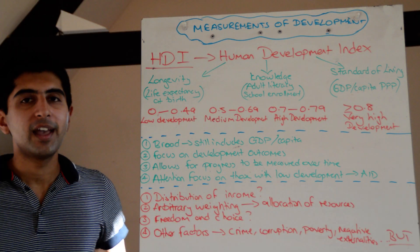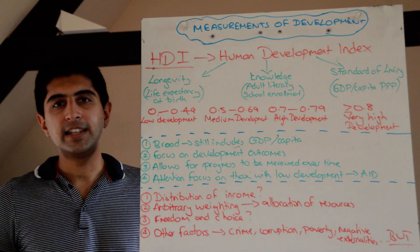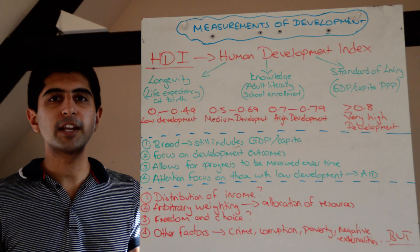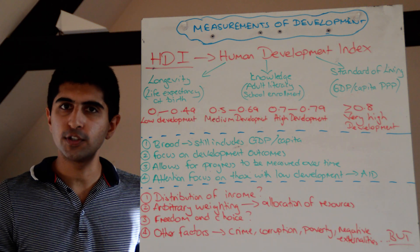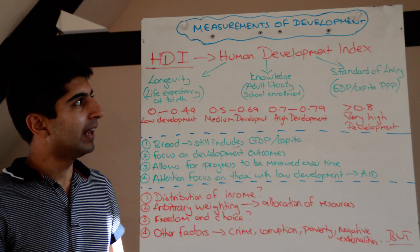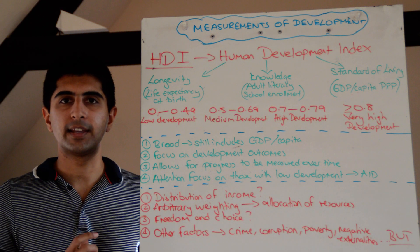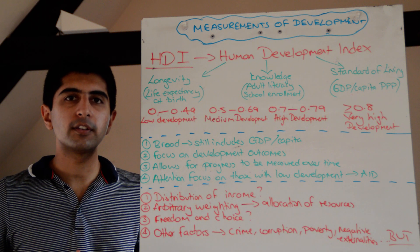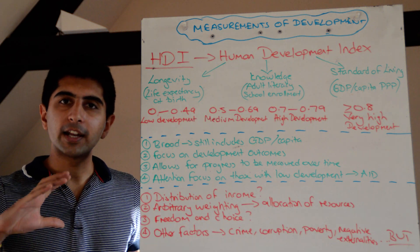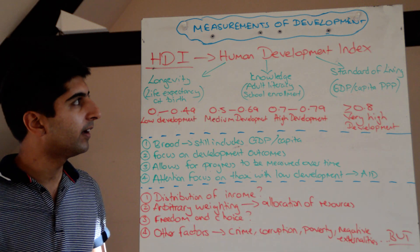Hi everyone. Having understood different single indicators to measure economic development and the limitations of them, let's now consider composite indicators — different measures of development that encompass more than just one indicator.